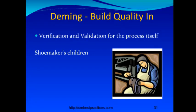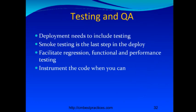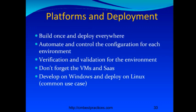One of the signs that you've been successful is if your continuous integration server console goes down and the developers start complaining — that tells you they were really starting to find it helpful. Deming says build quality in. It's important to test the release automation itself — the shoemaker's children need shoes too. For testing and QA, deployment needs to include smoke testing as the last step in the deploy. Any release manager should know how to test the application. You want to facilitate regression, functional, and performance testing. All of this automation should include a heavy focus on helping the test team and QA team verify the application is working correctly.